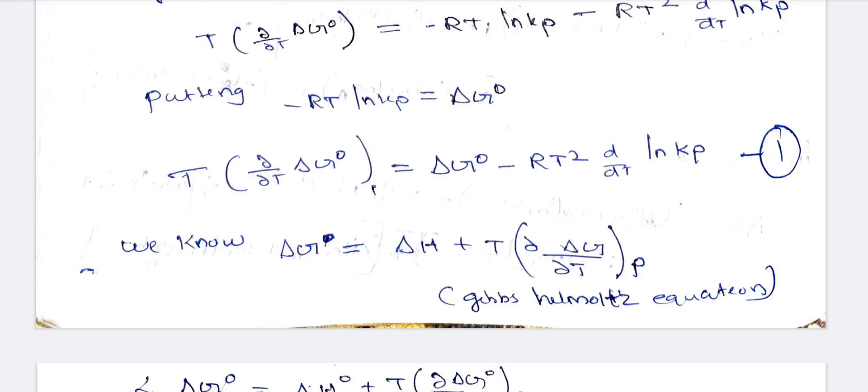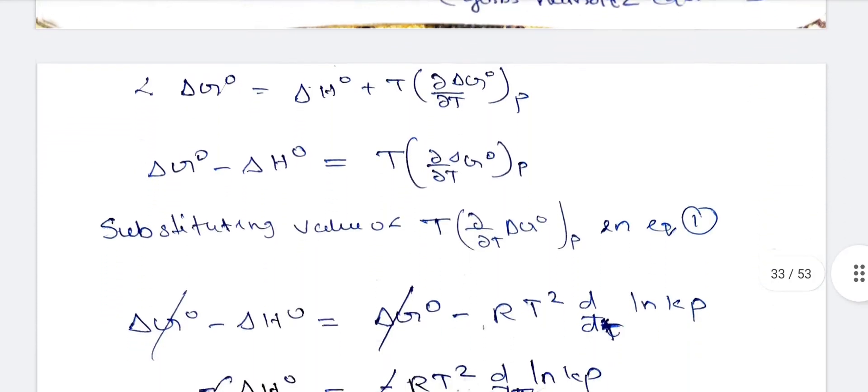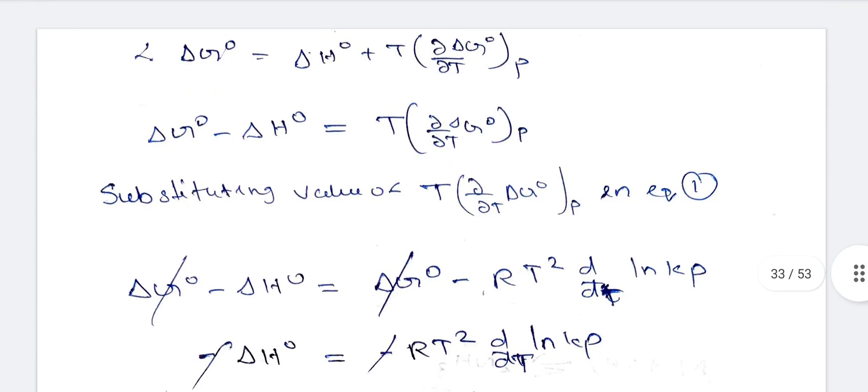We are going to look at the derivation. We know that delta G = delta H + T times d(delta G)/dT at constant pressure. Applying this to standard state quantities: delta G° = delta H° + T times d(delta G°)/dT at constant pressure.